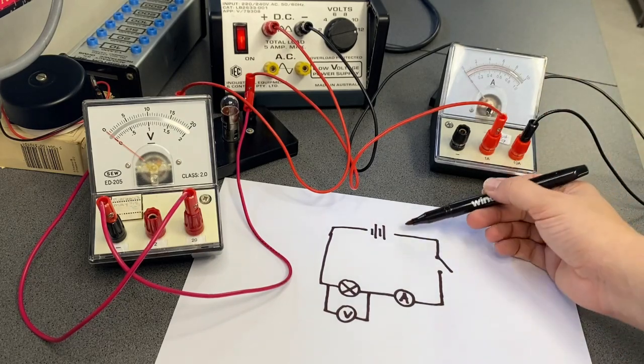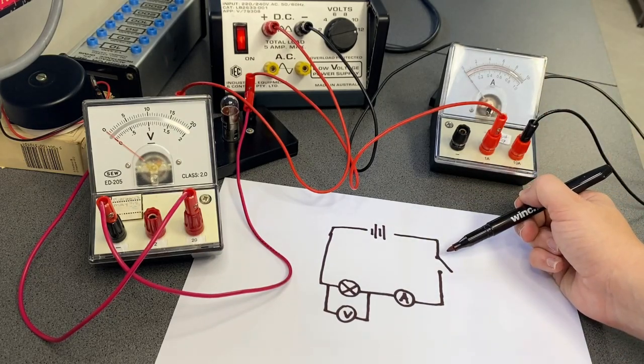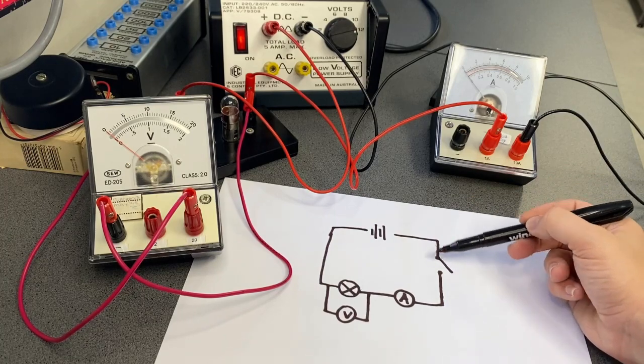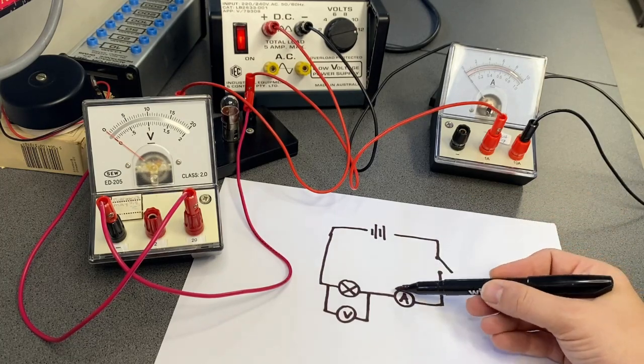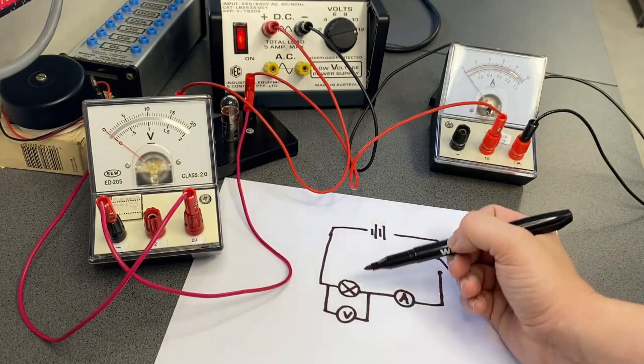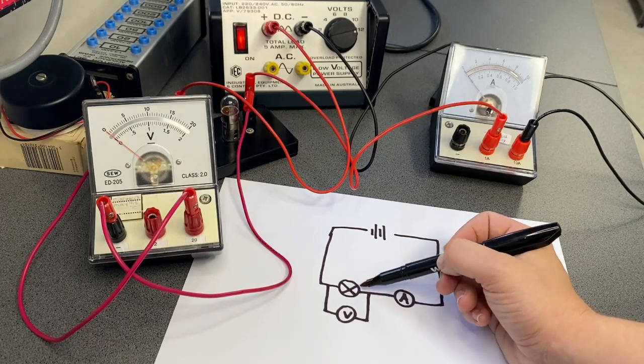Again, we use these different symbols to represent each component. So a straight line for the wires, an open switch like this, an ammeter is a circle with an A in it, and our light bulbs are a circle with a cross through it.